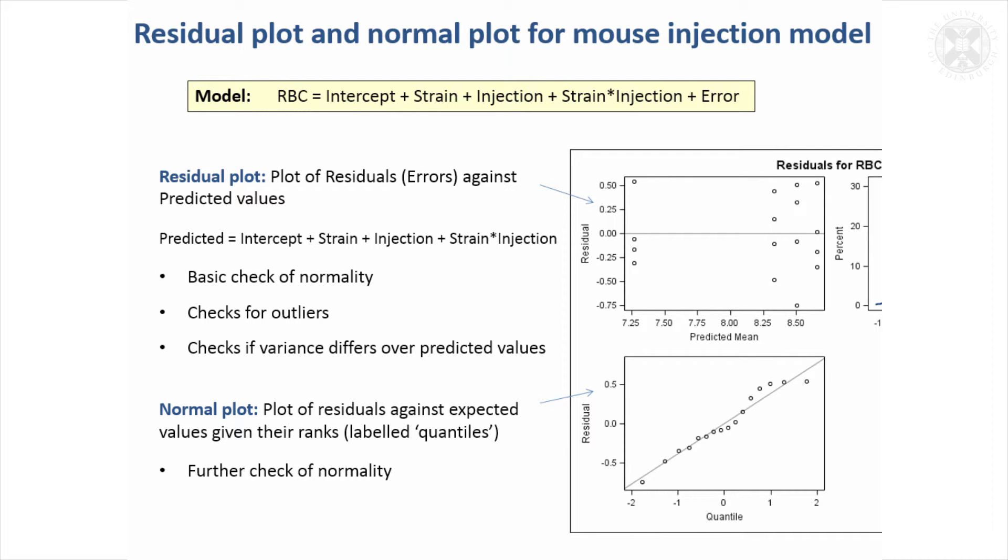For this example, this plot here is a residual plot—the predicted values from the model with residuals plotted against those predicted values. There's a bit of an art to interpreting these plots, but what you want to see is that there's no evidence of a pattern in the data and that they're reasonably similarly distributed regardless of the predicted mean value. It'll also help highlight any outliers in the data.